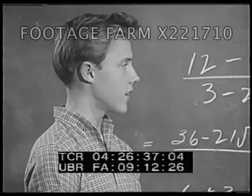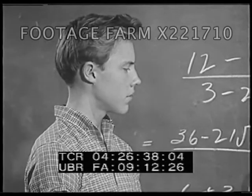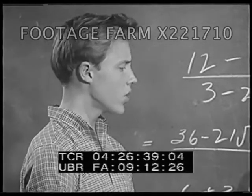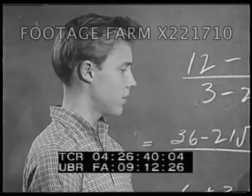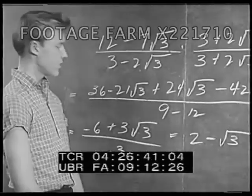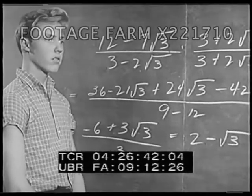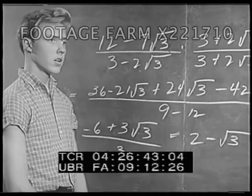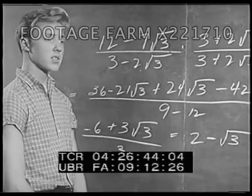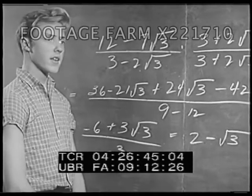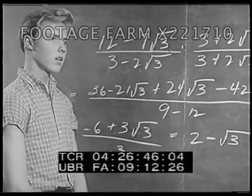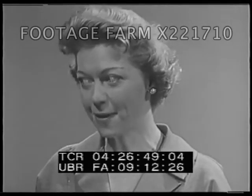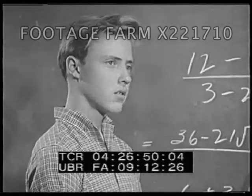Yes, I see that. But how do I know it'll always work out to a simple thing like 2 minus the square root of 3? Wouldn't I sometimes still get a radical in the denominator? No, you'll always get an expression like that one.